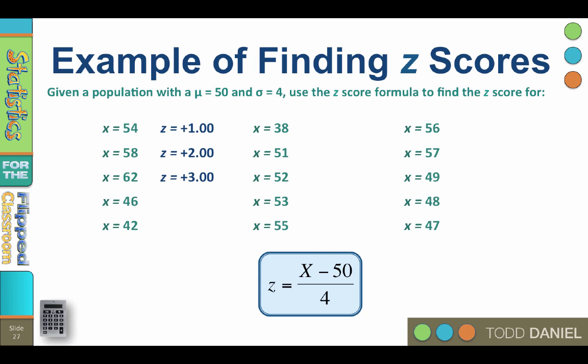For x equals 46, remember that 46 is 4 points below the mean of 50. What do you think the z will be? Plug in 46 to the formula, z equals negative 1.00. How about 42? 8 points below the mean. z equals negative 2.00.